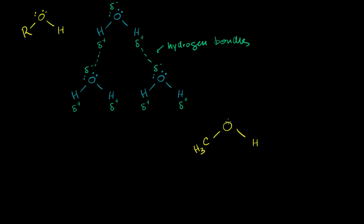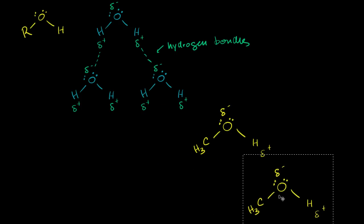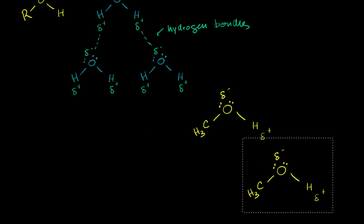Methanol has a hydrogen bonded to oxygen. The oxygen is much more electronegative than the hydrogen, so you have a partial negative charge on the oxygen and a partial positive charge on the hydrogen. Because of these hydrogen bonds, methanol will have a reasonable boiling point — it won't immediately turn into a gas. It can also form hydrogen bonds, though they won't be quite as strong as in water, which is why methanol has a lower boiling point than water.